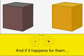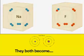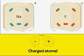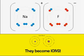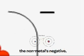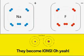And if it happens for them, they both become ions. Charged atoms, they become ions. The metal's positive, the non-metal's negative, they become ions. Oh yeah.